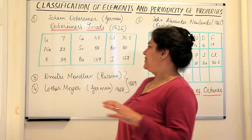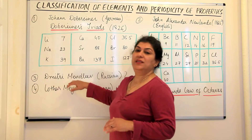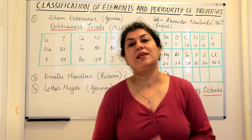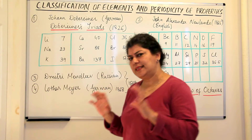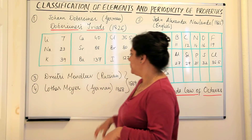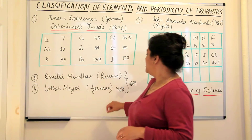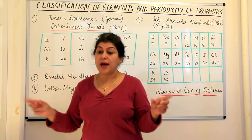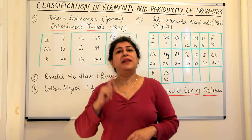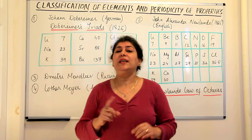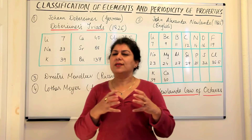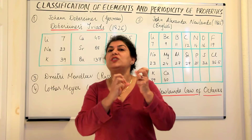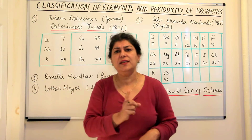So the next scientists were Lothar Mayer and Dmitri Mendeleev. Both these scientists were working simultaneously on the classification of elements and they did arrive at certain similar conclusions. Lothar Mayer was a German scientist who in 1868 said that if we arrange elements according to their increasing atomic masses, then we find that there is a periodicity in the properties — atomic volume, melting point, and boiling point do show similarities.